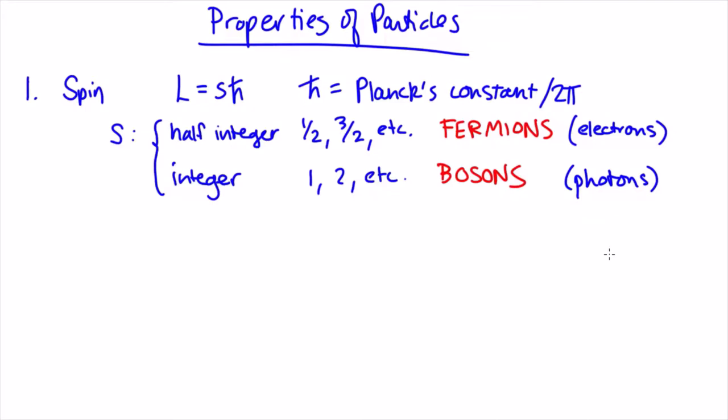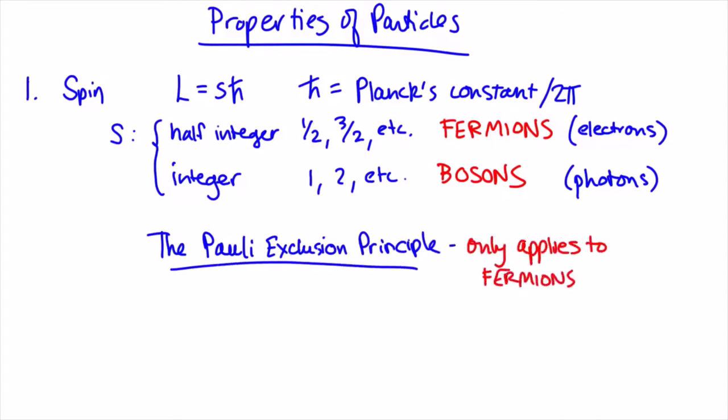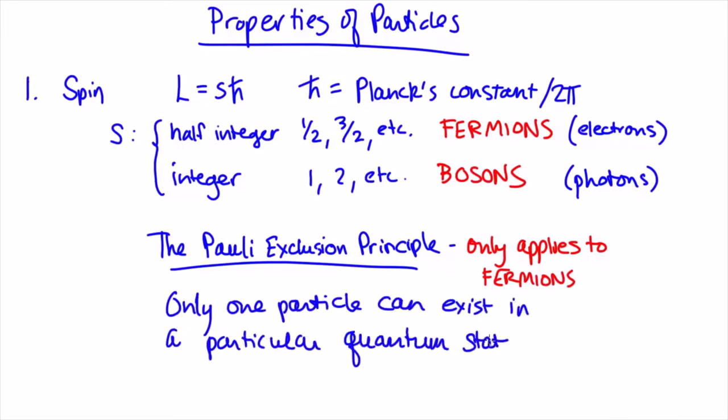Fermions are half integer spin. Bosons are integer spin. The reason spin is important is that there is a particular principle that applies only to fermions and not to bosons. And that principle is the Pauli exclusion principle. Now, what this principle says is that only one particle can sit in a particular quantum state at a time. Fermions have to obey this rule. Bosons don't have to.